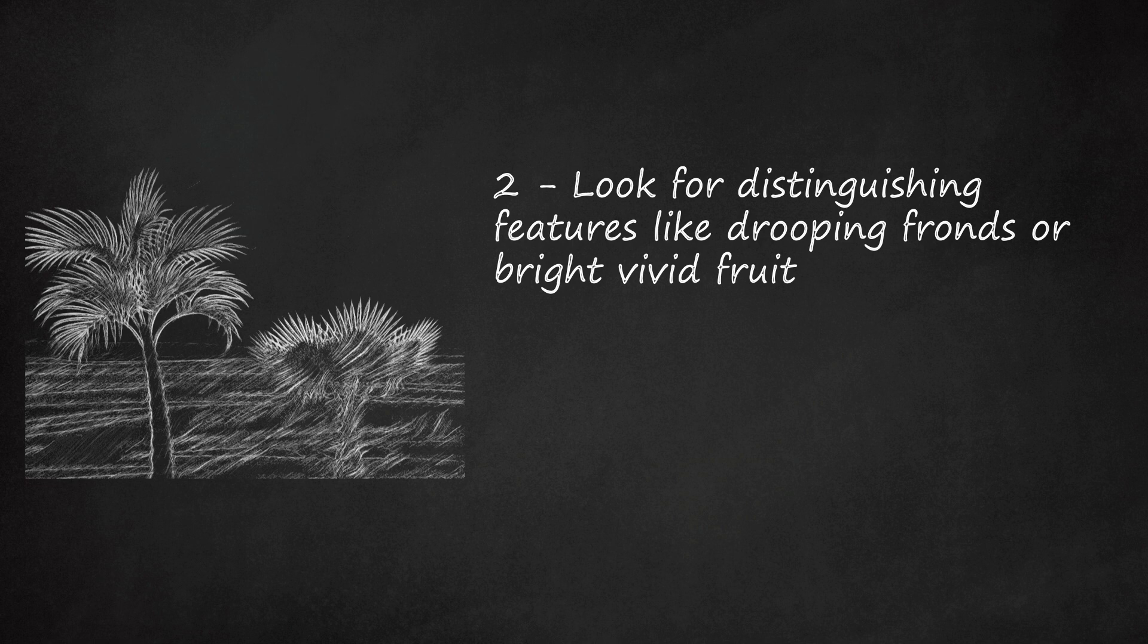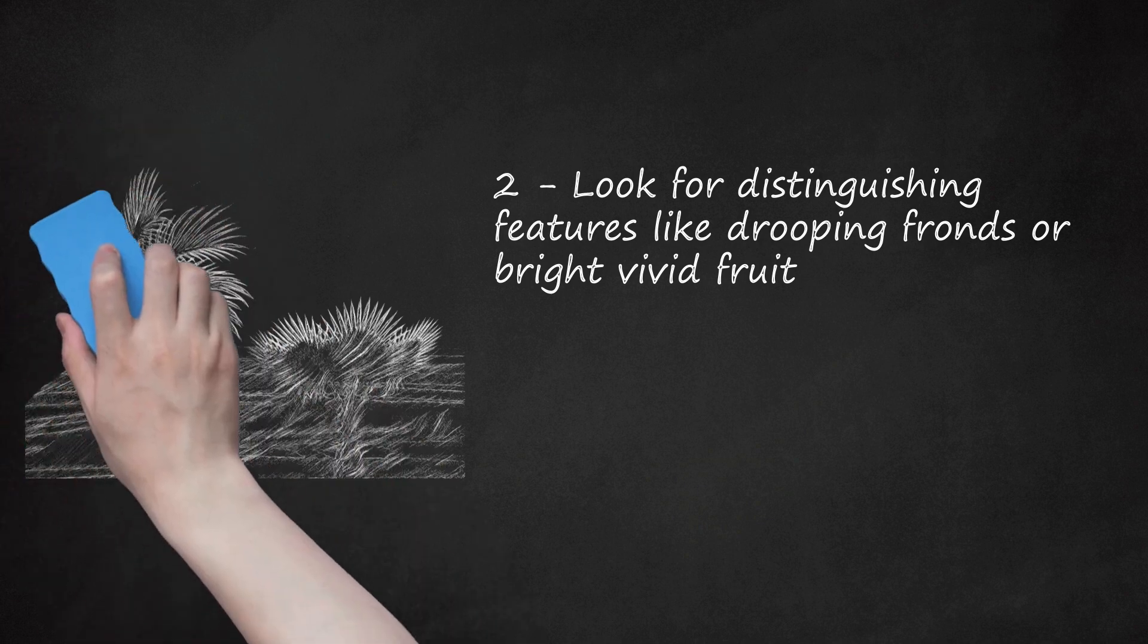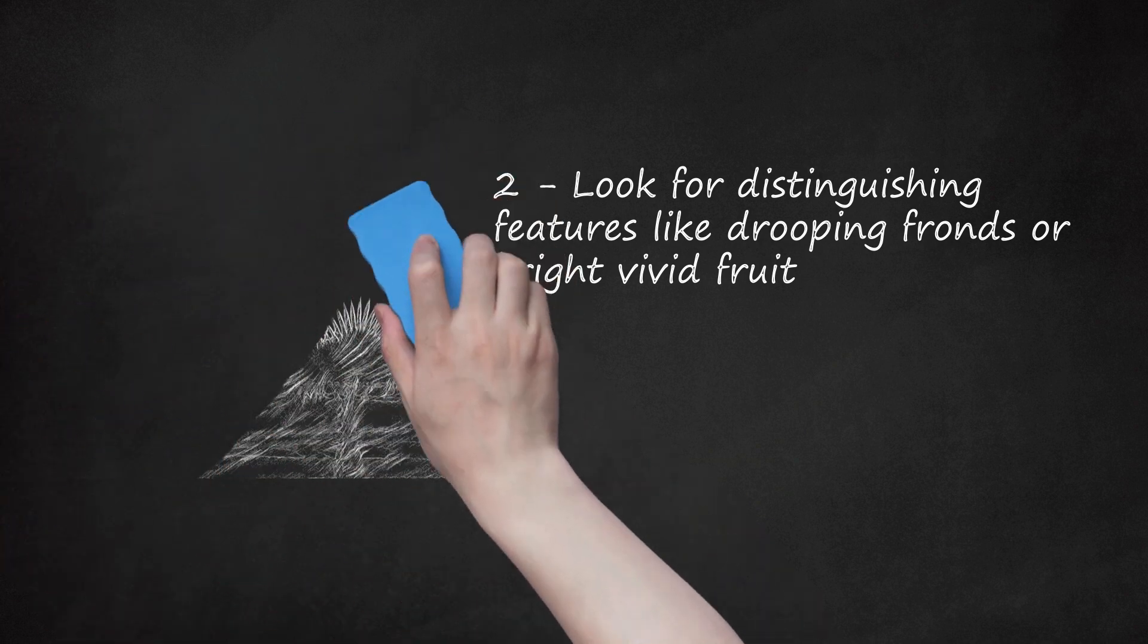Carpentaria palms consist of pinnate leaves atop a slender gray trunk marked with scars of old fronds. They are most distinguishable by the bright red fruits that grow in clusters beginning when the palm is about 6 years old.